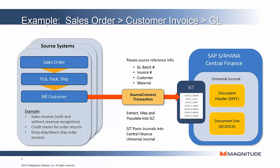SourceConnect Transaction will bring along important identifiers, such as GL batch number, invoice number, and references to customer material. This will end up in the Universal Journal in Central Finance, and technically it's doing all of the extraction and data transformations and validations using SAP Data Services.